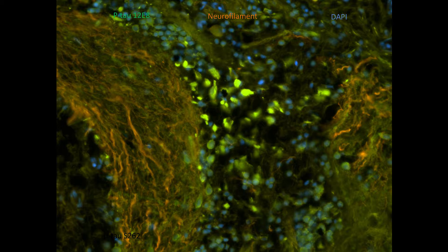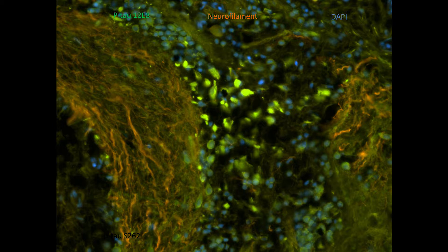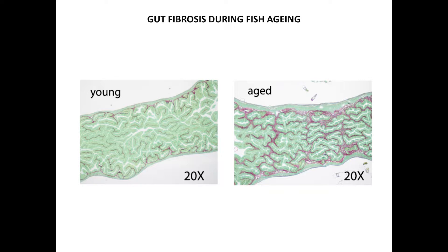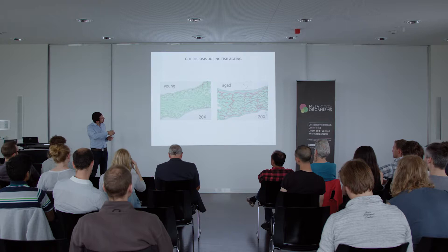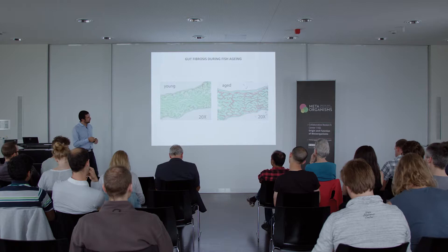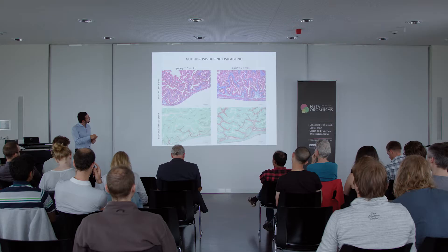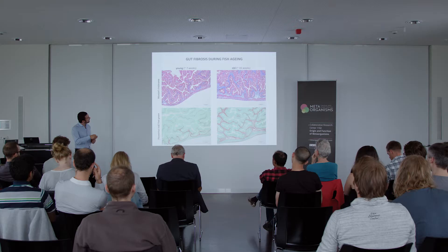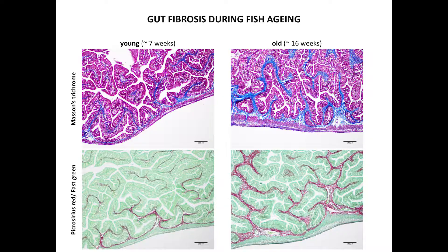This is a section of the gut of a young fish and this is an old fish. The purple staining represents accumulation of fibrosis — collagen. You see outstanding changes between young and old gut: there is a thickening of this space and more purple — more fibrosis — increasing spontaneously with age, which is a hallmark of aging not only for this species. These are two different stainings — Masson's trichrome on top and picrosirius red on the bottom — showing again that young seven-week-old fish have less fibrosis compared to old fish.